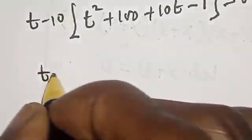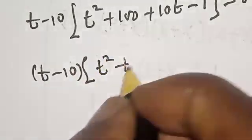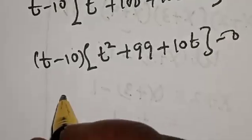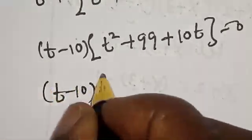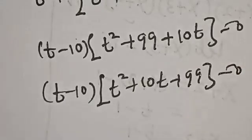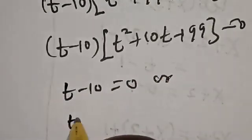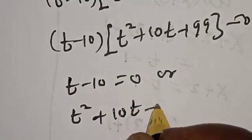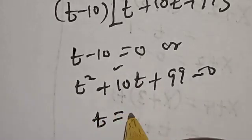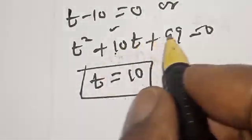Simplifying: (t − 10)(t² + 10t + 99) = 0. There are two cases: either t − 10 = 0, or t² + 10t + 99 = 0. From the first case, t = 10.